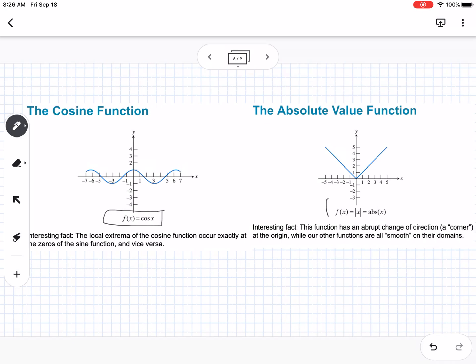The absolute value function is y = |x|, or abs(x) on the calculator. To input it, go to math, then over to number, and you'll see abs. Interesting fact: this function has an abrupt change of direction, a corner at the origin, while our other functions are all smooth on their domains.